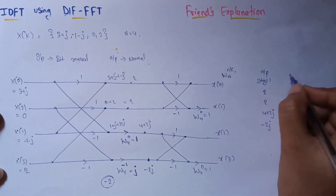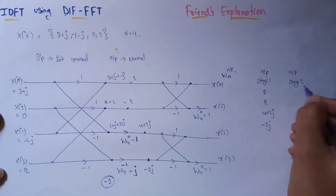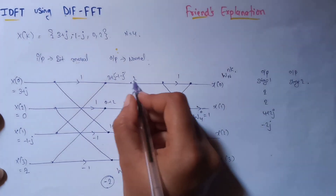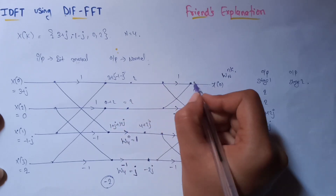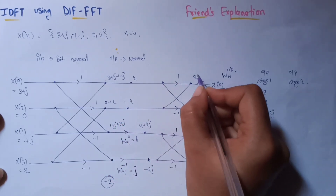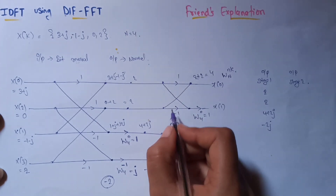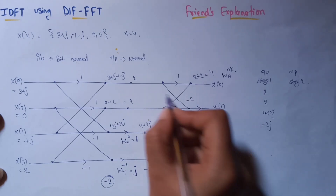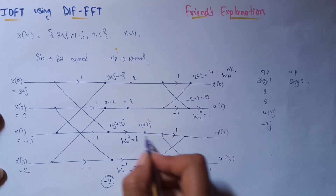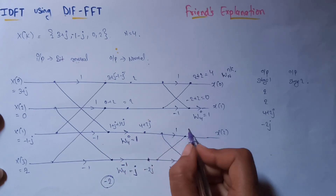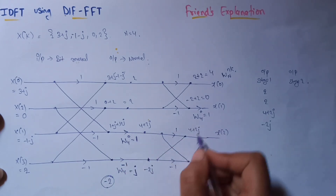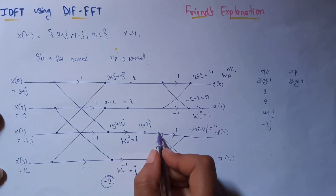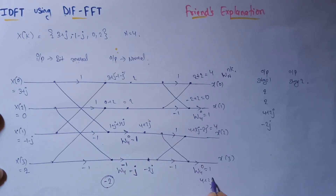Now we calculate the output of stage 2, which is the actual output. For the first line: 2 into 1 is 2, and from the second line 2 flows in giving 4. For the second line: 2 into minus 1 is minus 2, plus minus 2j gives 0, so the second output is 0. Wait — we got 4 for the first line. For the third line: 4 plus 2j flows in, and minus 2j into minus 1 gives plus 2j, so we get 4 plus 4j.